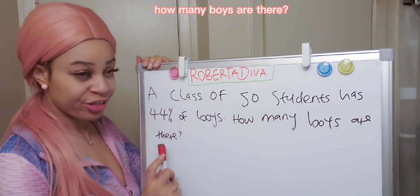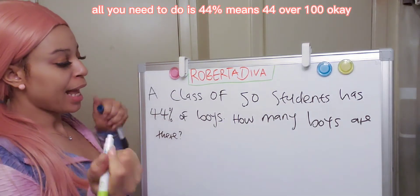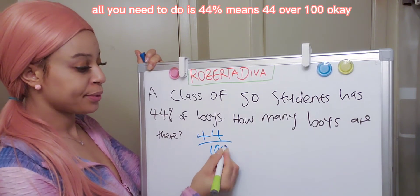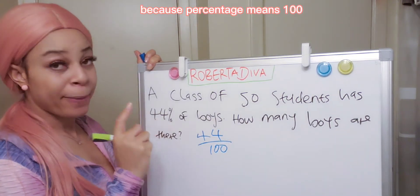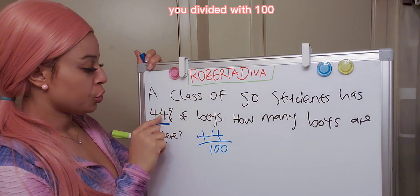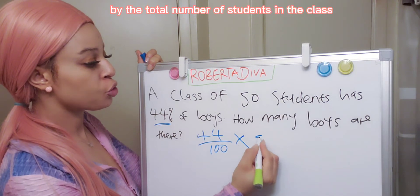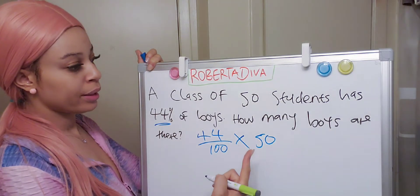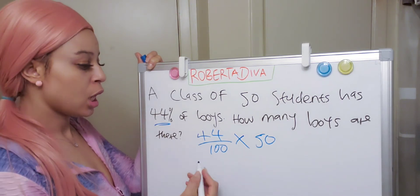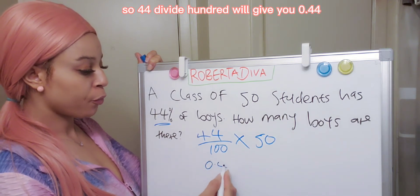How many boys are there? All you need to do is — 44 percent means 44 over 100. Percent means over 100. So 44 percent, you divide it by 100, then multiply by the total number of students in the class. That is how you get the total number of boys. So 44 divided by 100 gives you 0.44.